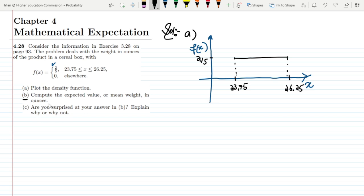Now in part B of this question we have to compute the expected value or mean weight in ounces. Which is again the same scenario in which we have to find the expected value of x and therefore as this is a continuous function.